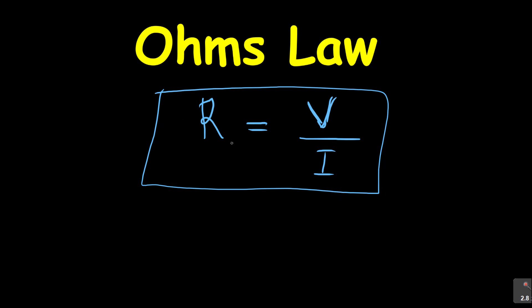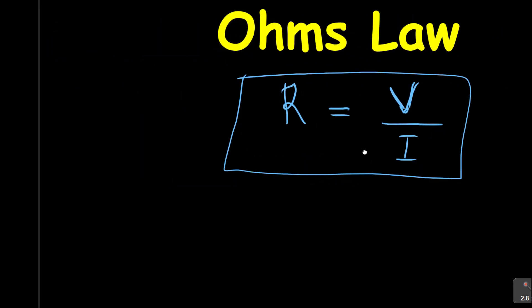Now, they can actually ask you to define what Ohm's Law means. You can say the resistance of a wire at constant temperature is directly proportional to the voltage and inversely proportional to the current that is flowing. So with that, you are able to continue with the other formulas.